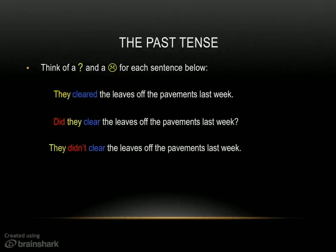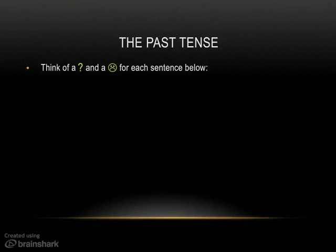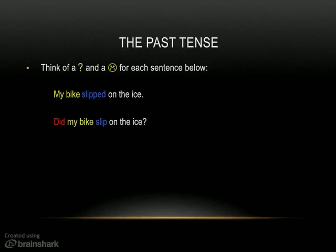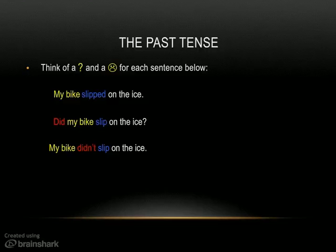Here is your next sentence: My bike slipped on the ice. Now think about the question and the negative. De vraag: Did my bike slip on the ice? Yes, it did. No, it didn't. Gebruik je vraagwoord in je antwoord. And the negative: My bike didn't slip on the ice.